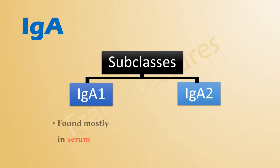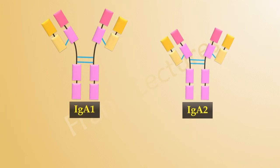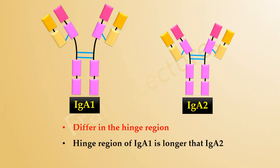IgA1 is mostly found in the serum, whereas IgA2 is predominant in the secretions. These two subclasses differ from each other in the hinge region. As you can see here, the hinge region of IgA1 is almost double that of IgA2.